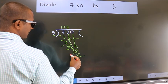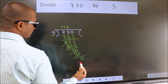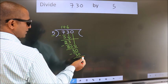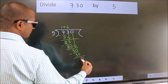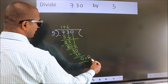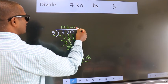Now, we subtract. We get 0. No more numbers to bring it down. So, we stop here. This is our remainder. This is our quotient.